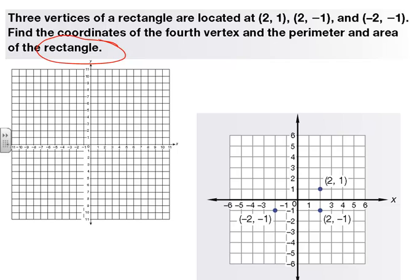All right. So it told us 2 and 1 right here. Then it told us 2 and negative 1. Go over 2 and down 1. And then we went minus 2 and down 1 to right here. So our rectangle is going to look like this. So our missing point is this one right here, which is negative 2 and 1. That's the missing one. That's what you should have came up with. Hopefully you did.